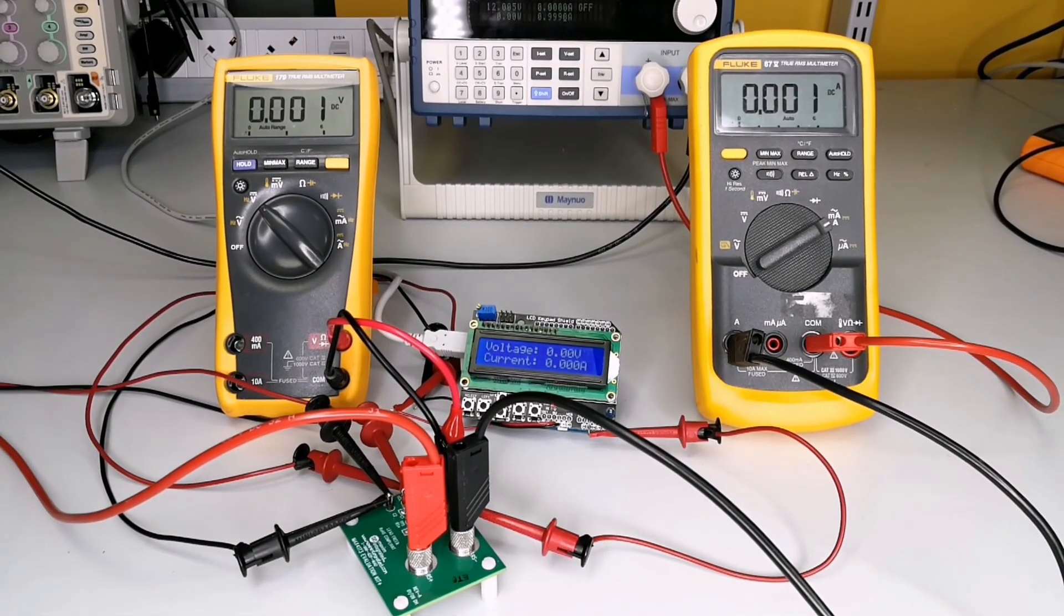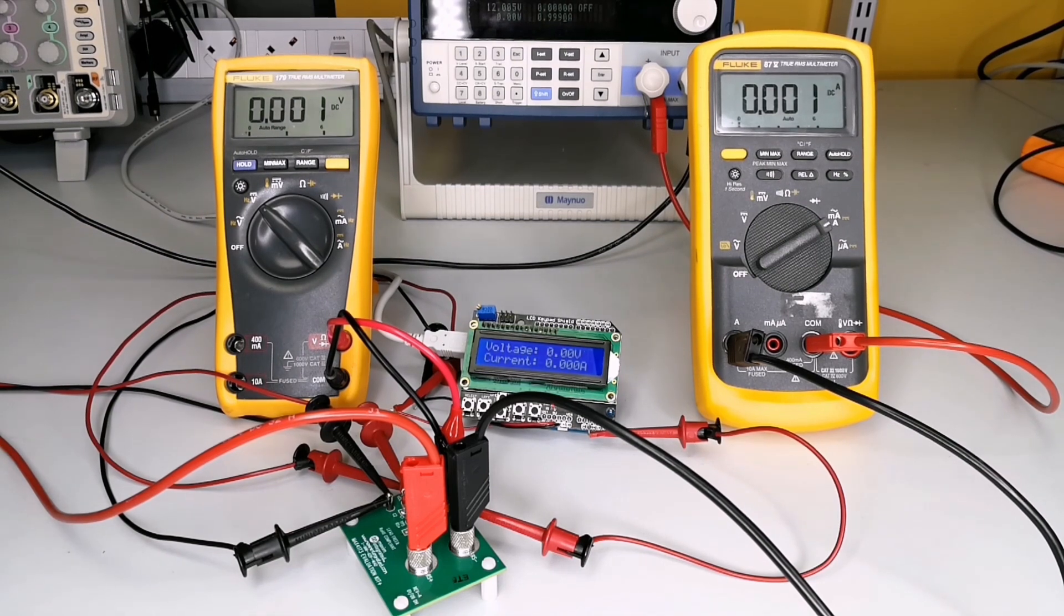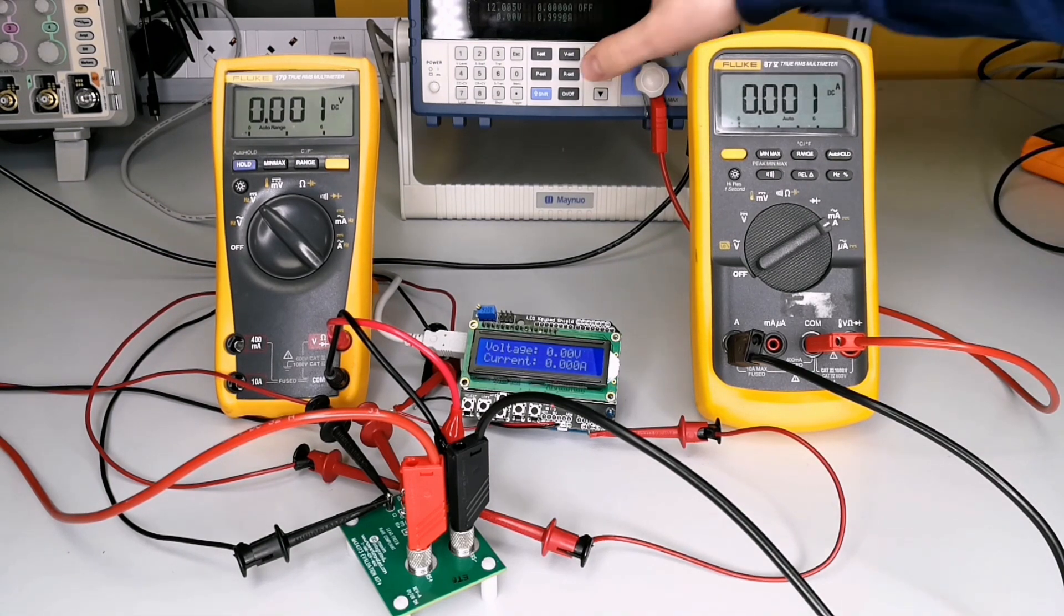I have written a simple sketch which reads analog pin A2 and displays it on the screen with a small delay before reading the analog value again. Like before, the programmable load is set to 1 amp current.